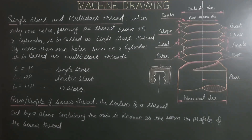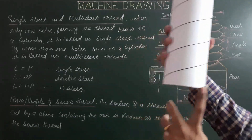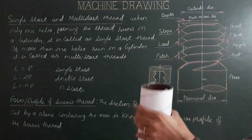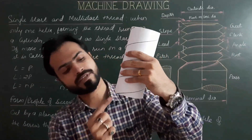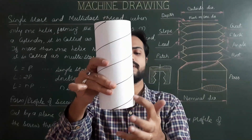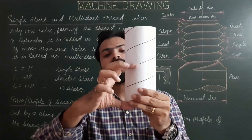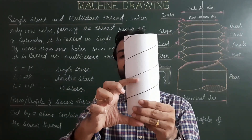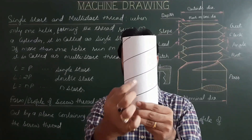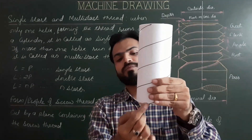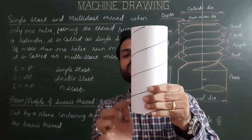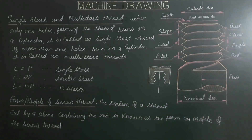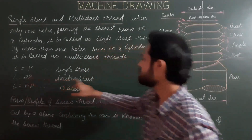For a double-start thread, there are two starts on the same plane — a first start and a second start. The first helical groove and second helical groove both run on the cylinder. The distance between two consecutive threads is pitch, while the total axial distance traveled in one rotation is lead. For double-start thread, lead equals 2 times pitch.